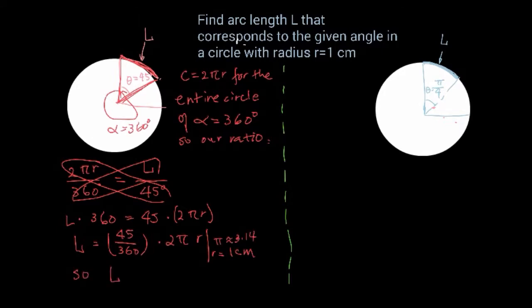Doing a little bit of simplification, I'm plugging in r equals 1 centimeter, and π is roughly 3.14. We have a numerical answer for L. Let me use my calculator and punch in the answer, so we have roughly 0.785 centimeters.